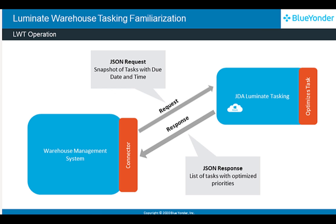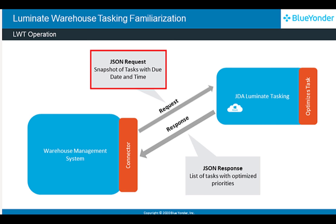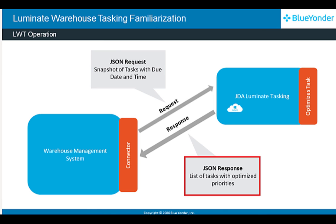Now, let's understand how WMS and LWT communicate to optimize warehouse operations. LWT communicates to WMS through a connector. Periodically, WMS sends JSON requests in the form of snapshots, with the details of tasks with due date and time to LWT. LWT sends the JSON requests back to WMS with an optimized priority task list.